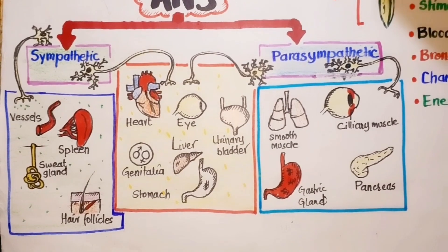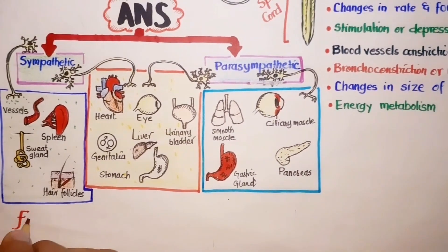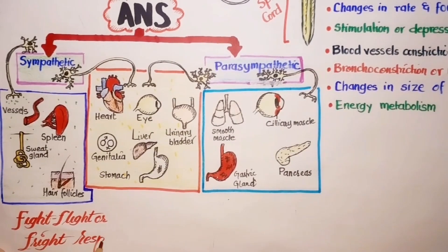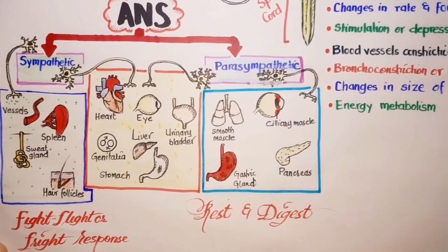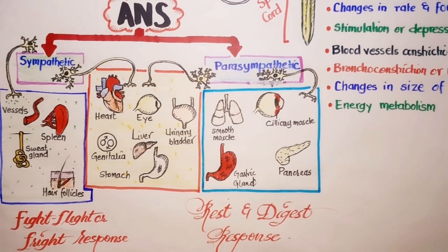The sympathetic division prepares the body for energy-expending, stressful, or emergency situations — it is part of the fight-or-flight response. Conversely, the parasympathetic division is most active under ordinary, restful conditions, otherwise known as the rest-and-digest response. It also counterbalances the effects of the sympathetic division and restores the body to a resting state following a stressful experience. For example, during an emergency the sympathetic division increases the heart rate; following the emergency, the parasympathetic division decreases the heart rate.